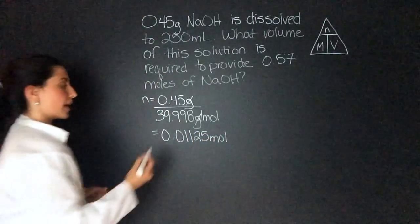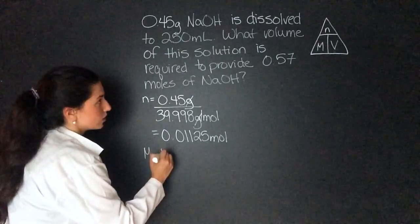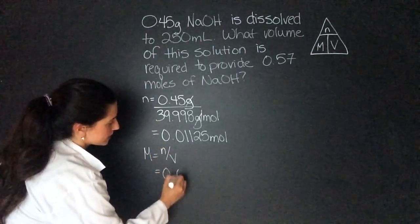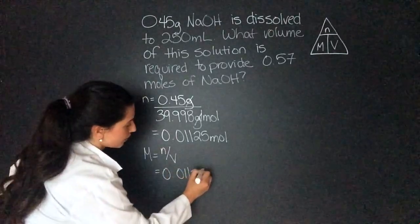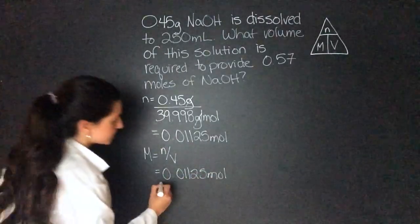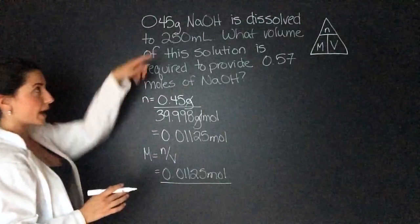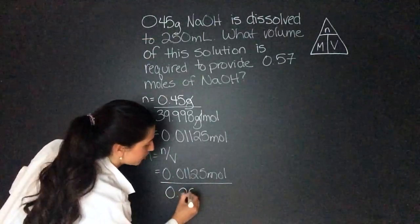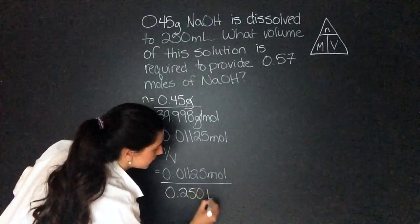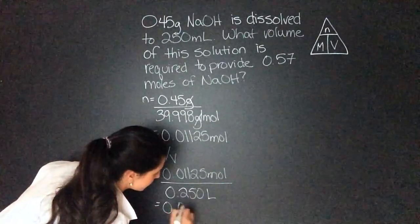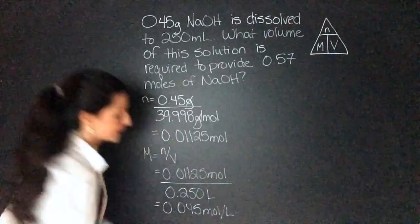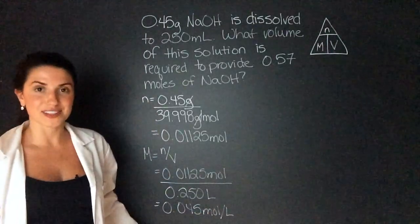Now let's find molarity. Molarity equals moles divided by volume, which equals 0.0125 moles divided by, remember we have to convert this into liters, 0.250 liters. That equals 0.045 moles per liter. Now we have the molarity of our solution.